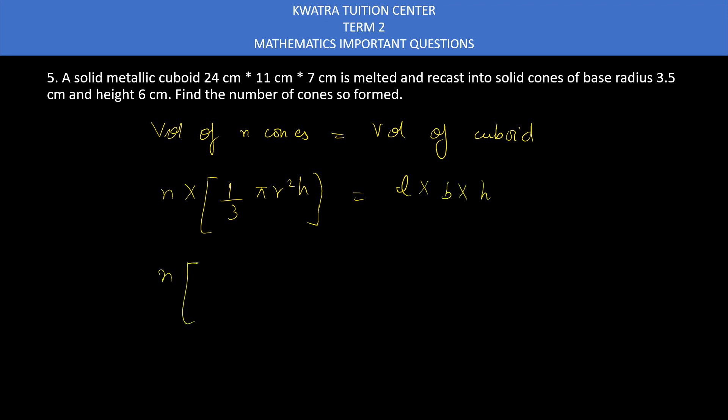We have to find out, 1 by 3 as it is, pi value is 22 by 7, r square, how much r square? 3.5 into 3.5, h value is 6, l into b into h, which is 24, 11 into 7. So we cancel some values here so that we can find out.